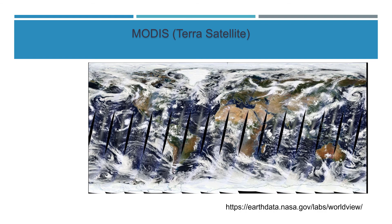That's amazing. This is a typical MODIS image from the Terra satellite. This is an example of a raw image without cloud masking or any processing — just the raw image from the MODIS Terra satellite.